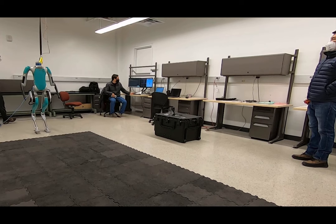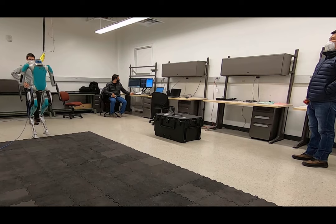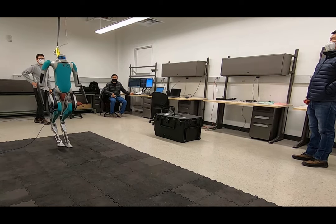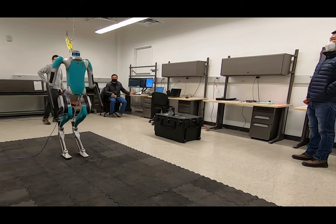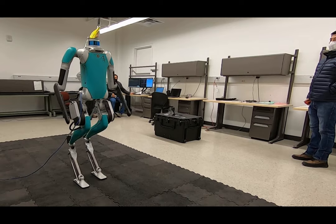In this work, a hierarchical and robust framework for learning bipedal locomotion is presented and successfully implemented on the 3D biped robot Digit. We propose a cascade structure controller that combines high-level trajectory planning with low-level intuitive feedback regulations.